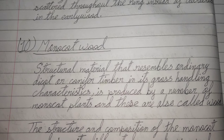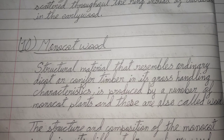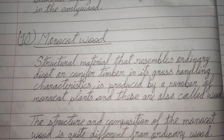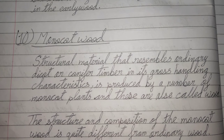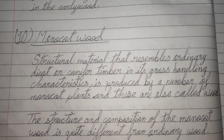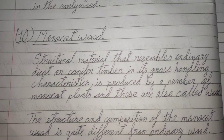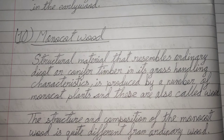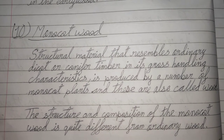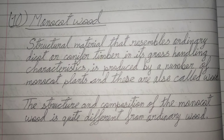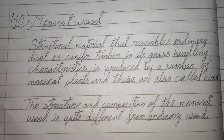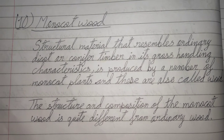Monocot wood refers to structural material that resembles ordinary dicot or conifer timber in its gross handling characteristics, produced by a number of monocot plants. The structure and composition of monocot wood is quite different from ordinary wood.